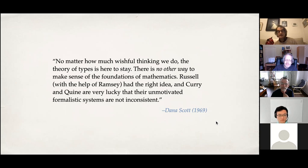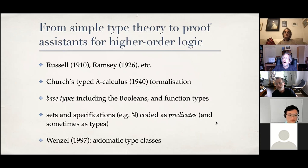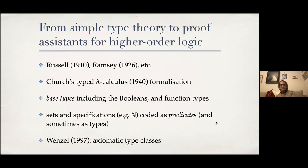This particular talk is about using simple type theory to formalize mathematics. I should say a little about what simple type theory is. It does indeed date to Russell and Whitehead. It wasn't simple then, but Ramsey simplified it and Church formalized it in the form that we know today — that is, the typed lambda calculus.